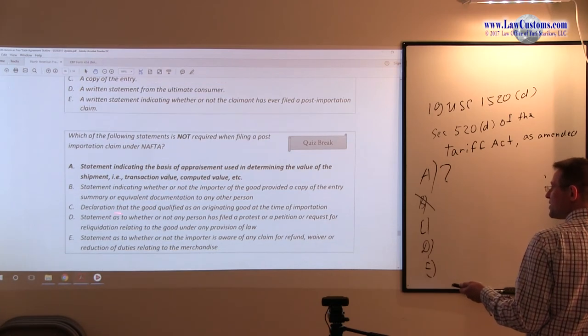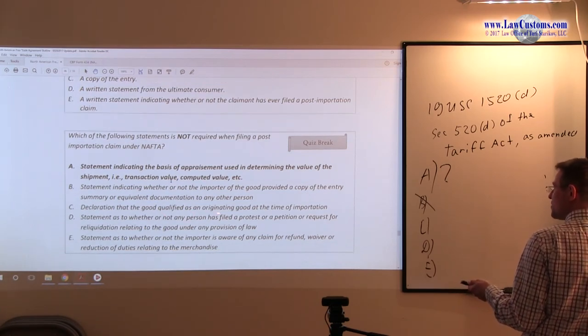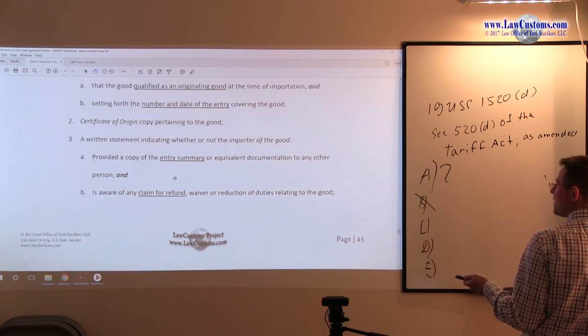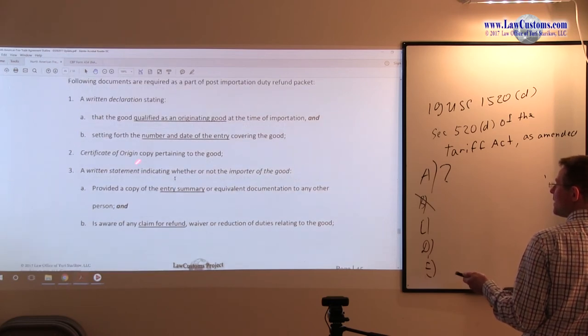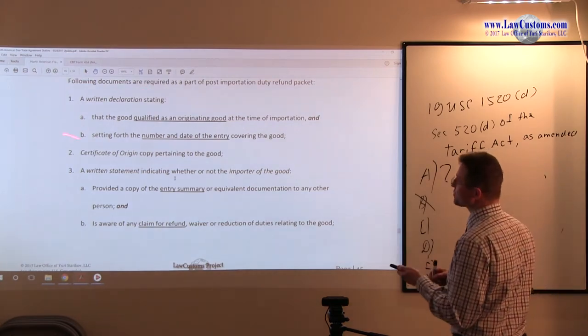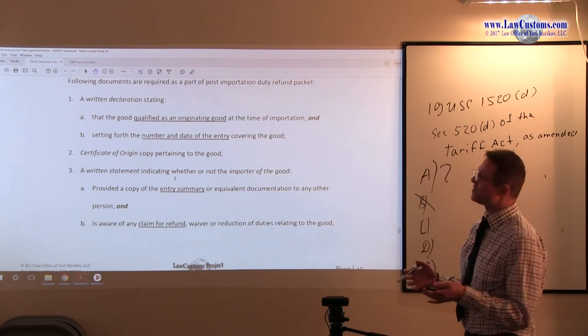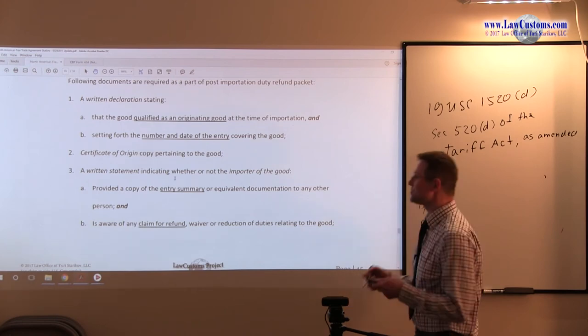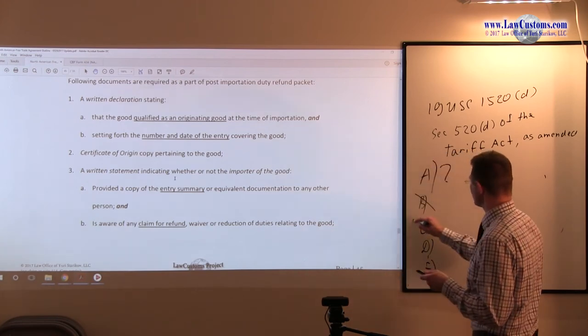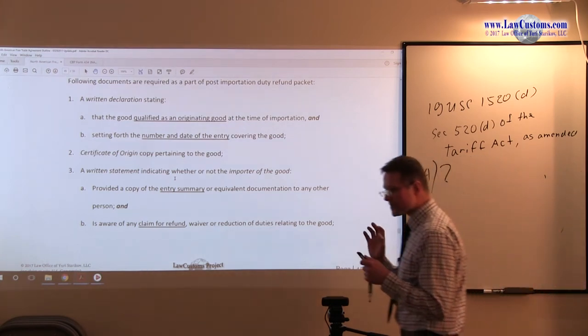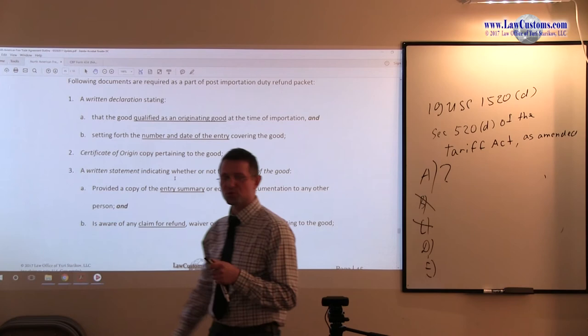We have C, declaration that the good qualified as originating good at the time of importation. Well, that can be done, it's a written declaration in addition to certificate of origin. So certificate of origin is also a way of making a statement too, but as you can see, procedure is procedure. So this one is also on the list, so C is out.